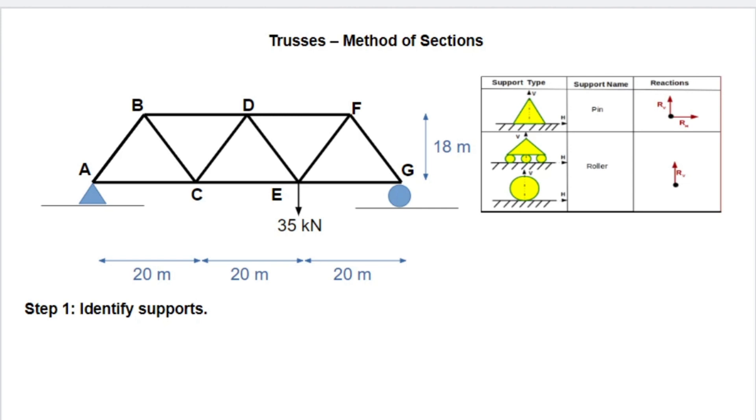So if we look here at G, we have a roller support, and clearly a roller will allow whatever's resting on it to translate in the X direction, but not translate in the Y direction. So for that reason, we're going to have a support reaction in the Y direction at G. Likewise, at A, we have a pin support, which will not allow translation in either direction. It will allow rotation about it, but no translation. And since it's constraining translation in both those directions, we'll have reactionary forces in both those directions.